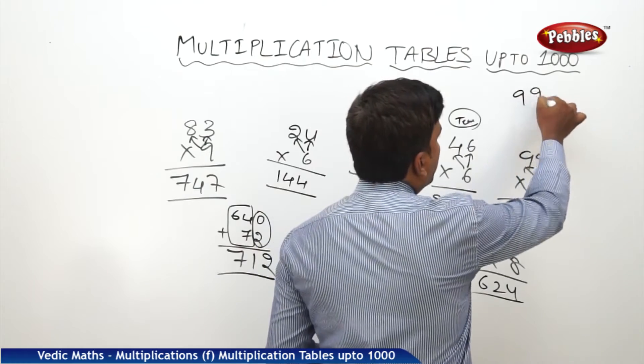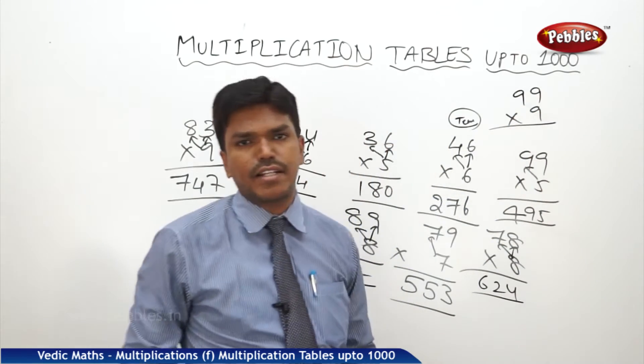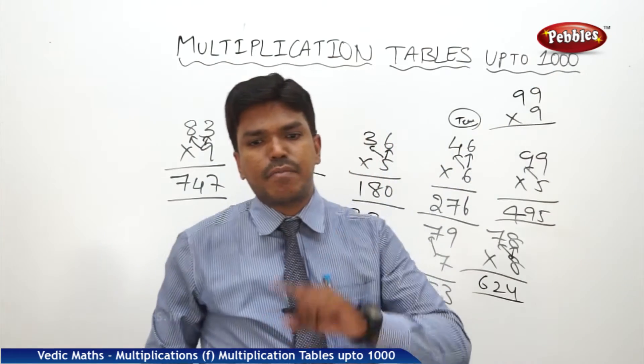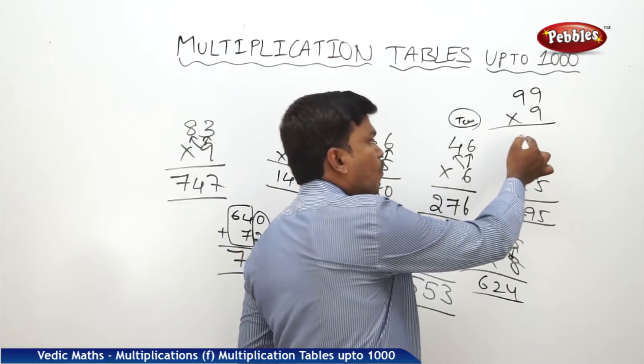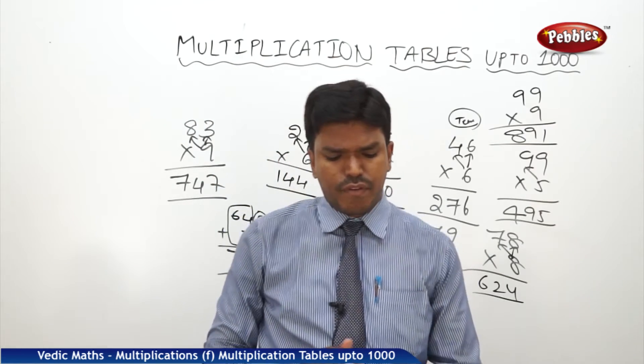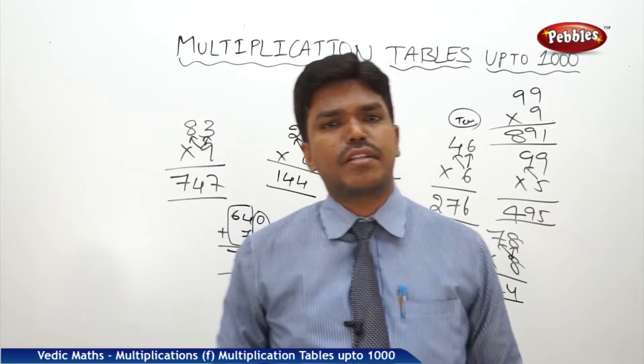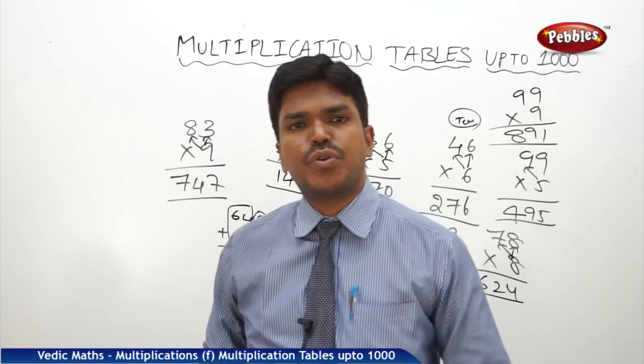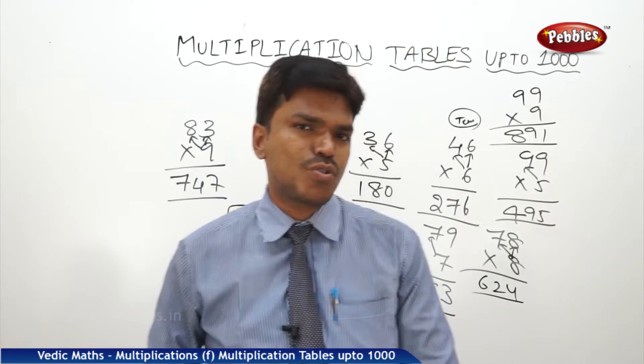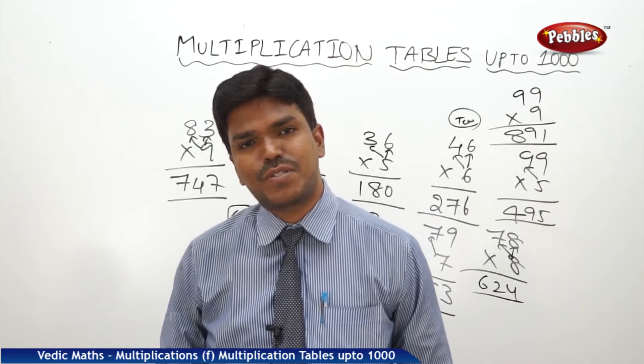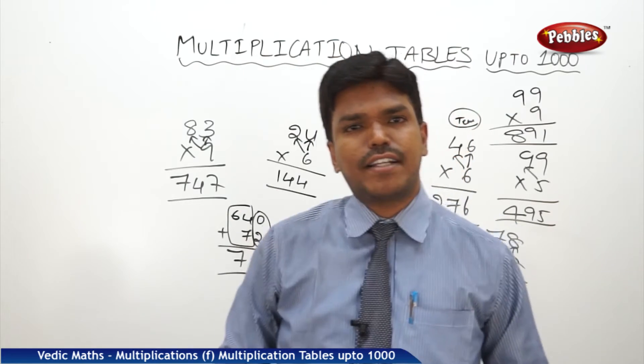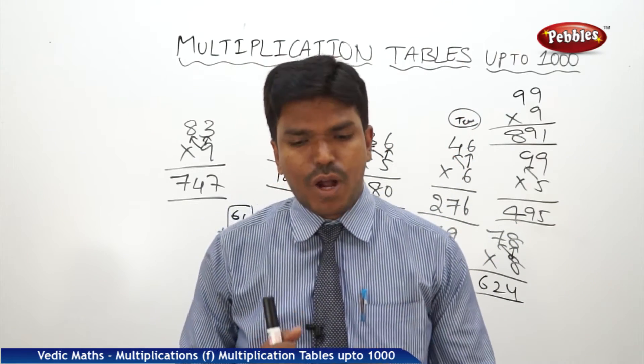So you tell me what is 99 nine times? Exactly 810 plus 81. 810 plus 81 is 891. So now you tell me if anybody asks you immediately, how many tables do you know until now? You know up to 99 tables or not? Yes, we know up to 99. Not even 99, we know 100 also. You can say gladly, you can say proudly that we learned now until 100 tables.